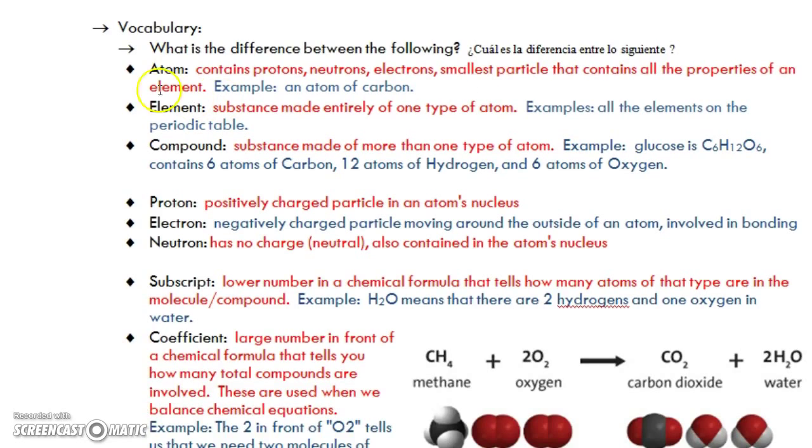So some vocab to review. Differences between the following: An atom is a very tiny particle that contains all the properties of an element. So let's say we're talking about carbon. One atom of carbon is the tiniest little particle that contains all of the things that make carbon look and act like carbon. It contains protons, neutrons, and electrons.